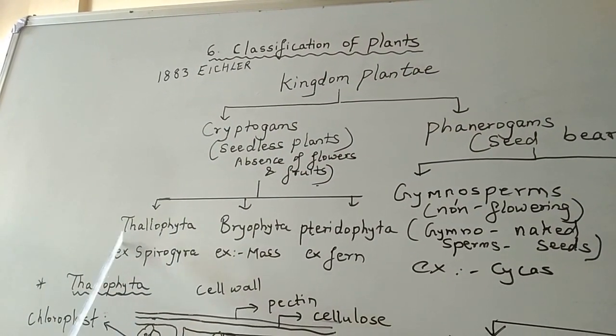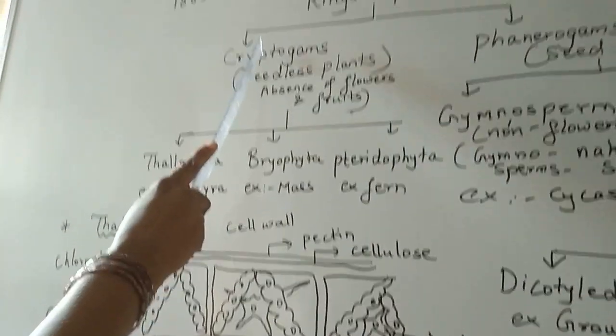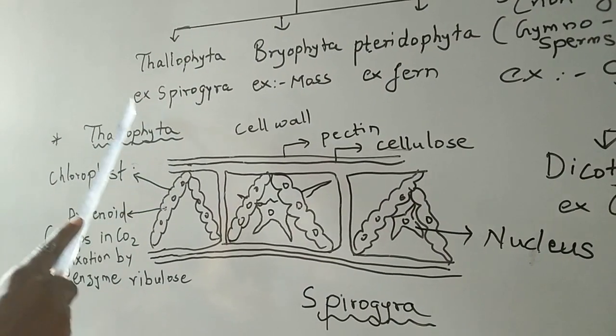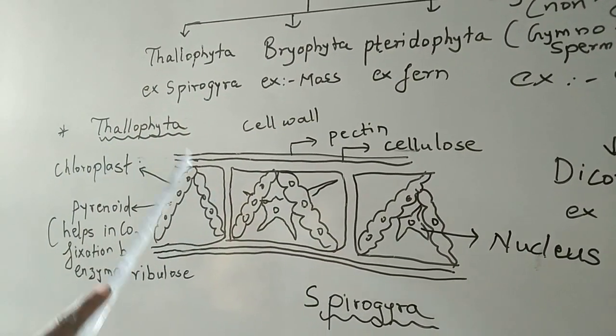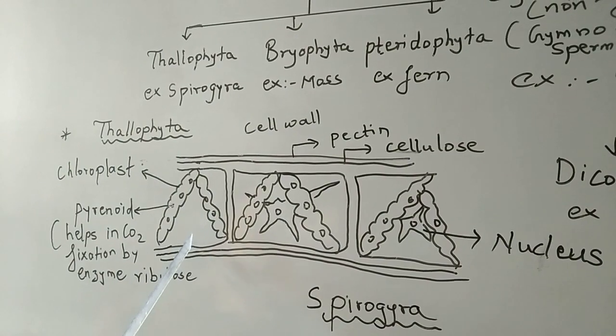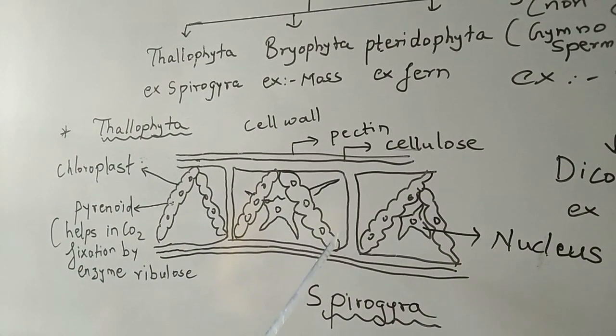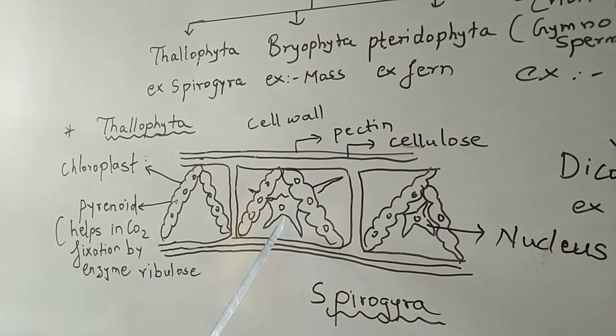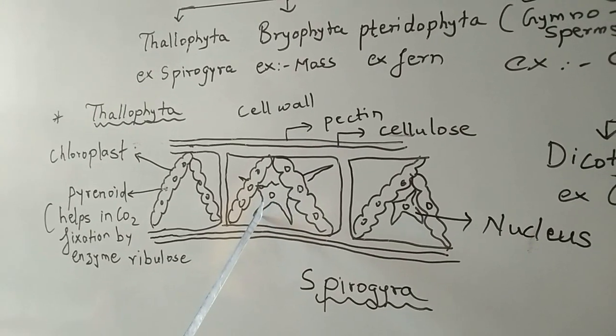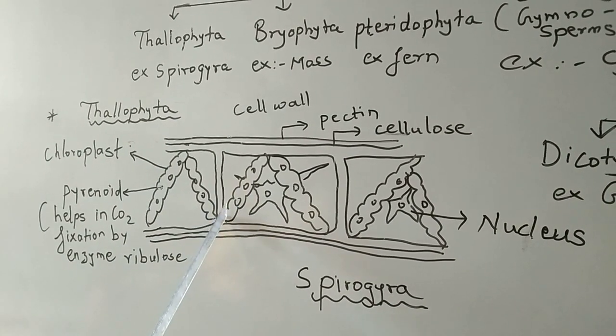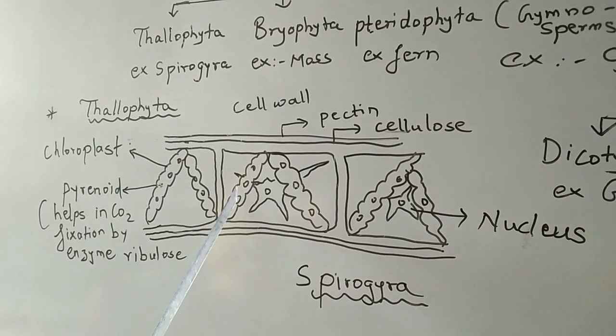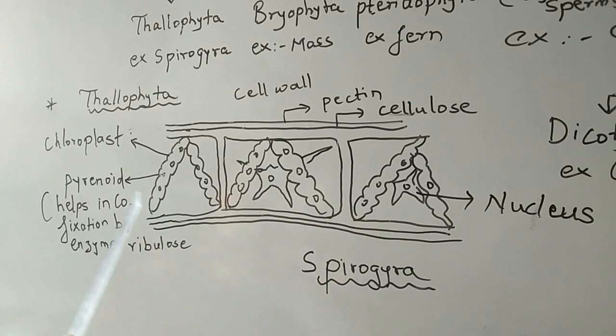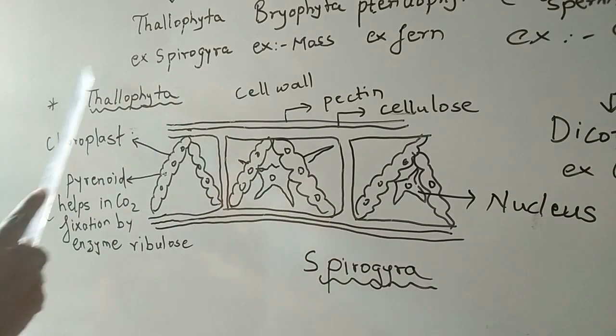We are going to study about the division thallophyta which comes under cryptogams. Some general characteristics of thallophyta: these plants grow mainly in water. They do not have specific root, stem, leaves, or flower. They are autotrophic because they can prepare their own food. Since chlorophyll is present in them, they can prepare their own food. These plants usually have a soft and fiber-like body.